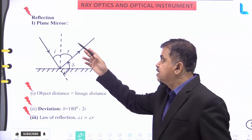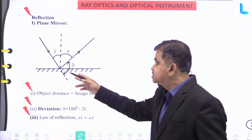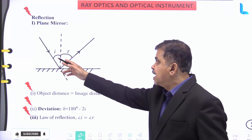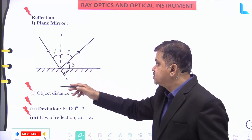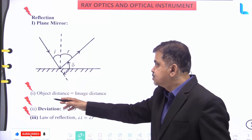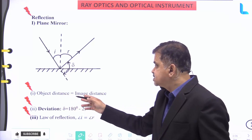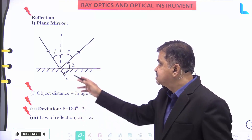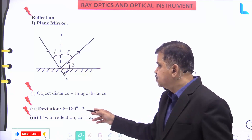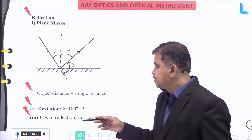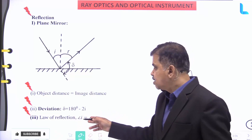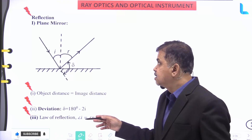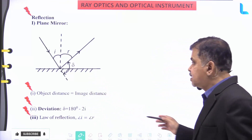The first concept is reflection under a plane mirror. With respect to the reflection principle, I is the angle of incidence and R is the angle of reflection. For a plane mirror, object distance equals image distance, and the deviation delta is given by 180° minus 2I. The law of reflection states that the angle of incidence equals the angle of reflection: I = R.